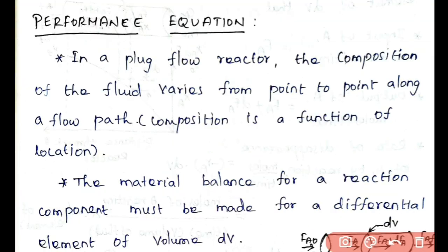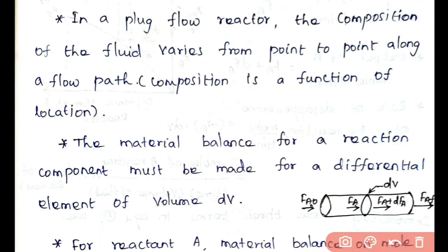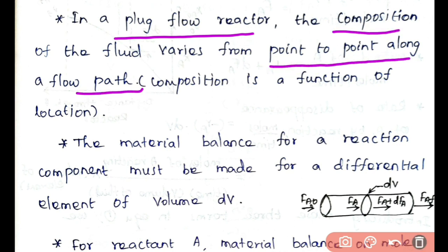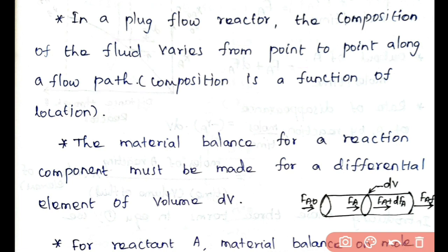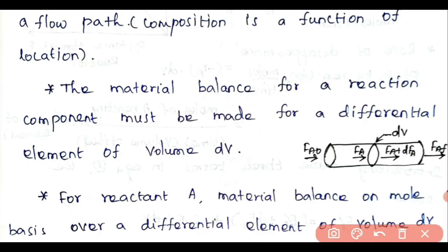Next we will see how to derive the performance equation for an ideal plug flow reactor. As already explained, in a plug flow reactor the composition of the fluid varies from point to point along the flow path, so the composition is a function of location.